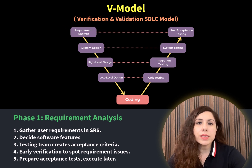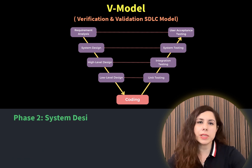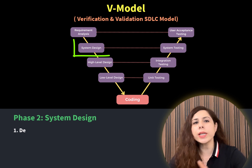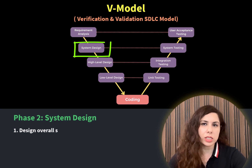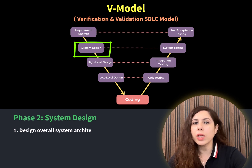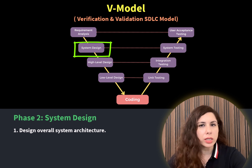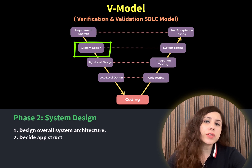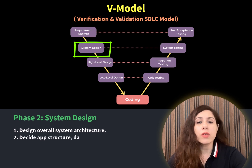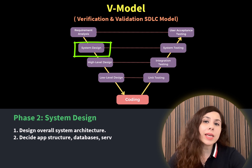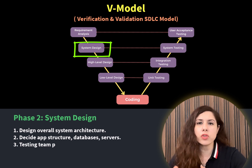The second phase is System Design. In this phase, we design the overall system architecture. We decide how the app will be structured, what databases we will need, what kind of servers will be required, how it will be scaled, and how it will be resilient.